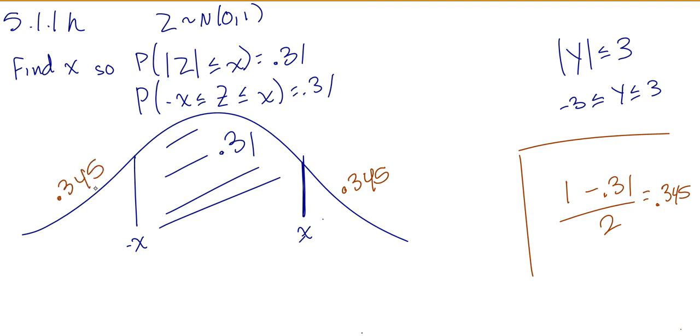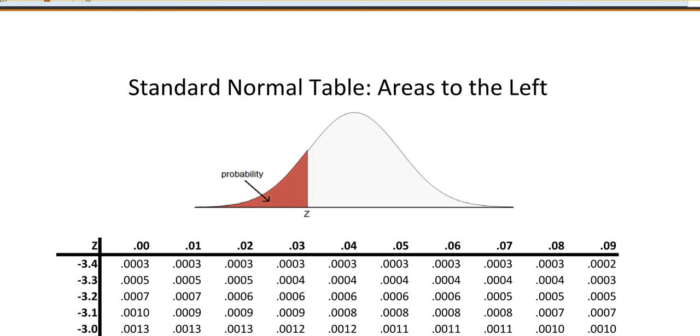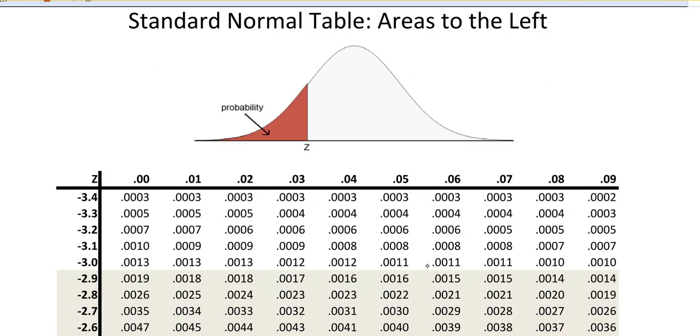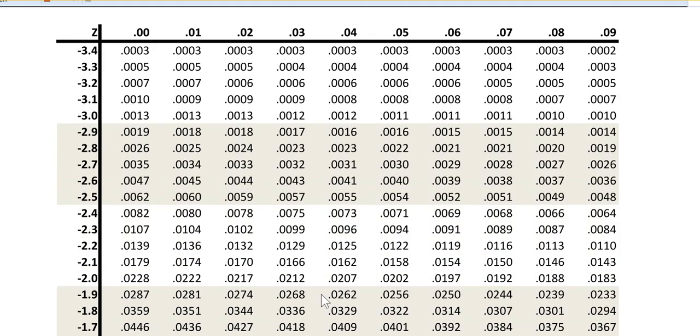There's two ways you can do this. We can go look up just the 0.345 in the table. Remember our table always gives us areas to the left. So we go to our normal table and we're looking for that area of 0.345. Remember the areas are always in the middle, so look in the middle for 0.345.